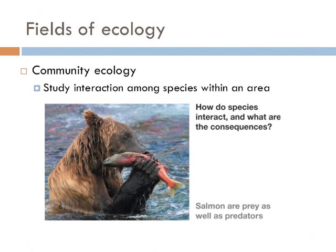In ecology, a community is an assemblage of two or more populations of different species occupying the same geographical area. A community ecologist might study the effects of predation of bears on salmon.